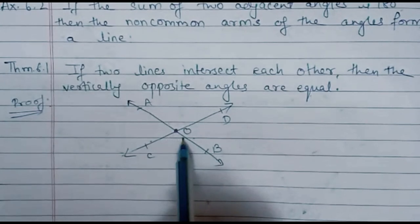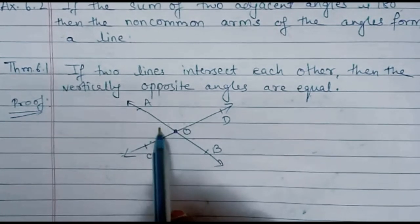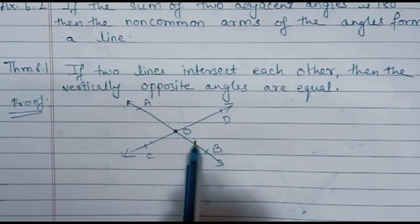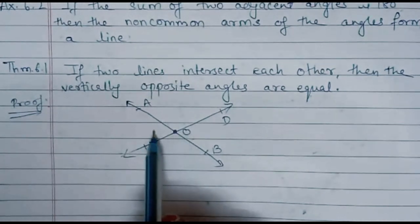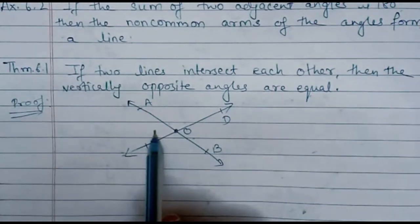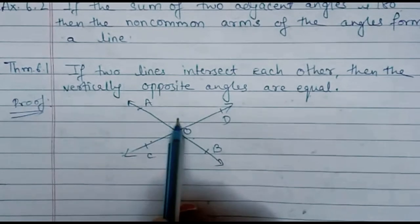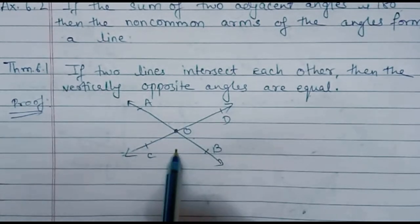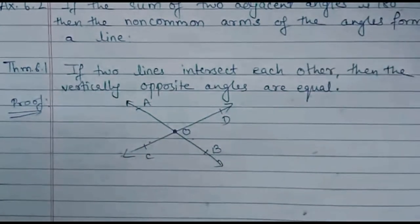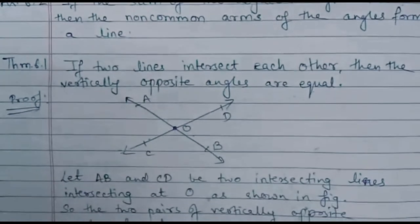The second pair is angle AOC and angle BOD. We shall prove that these two angles are equal in measure, as well as angle AOD and angle BOC are also equal in measure. Okay, so this is the introduction.